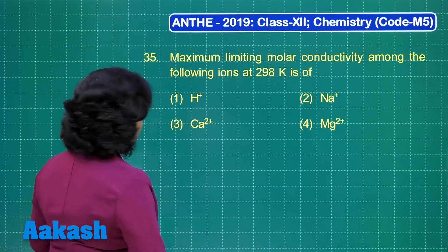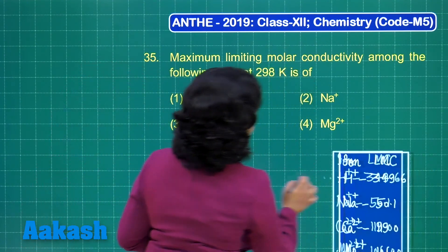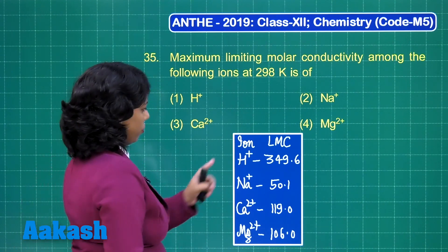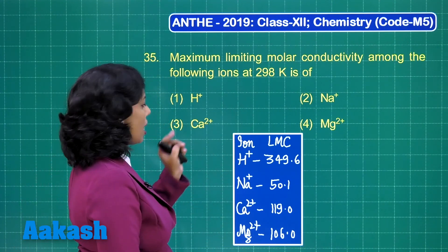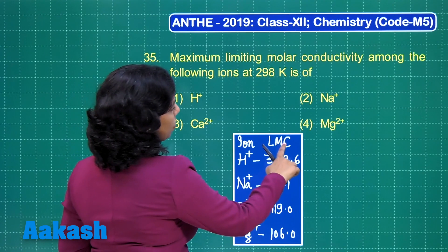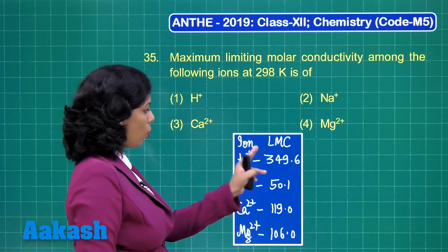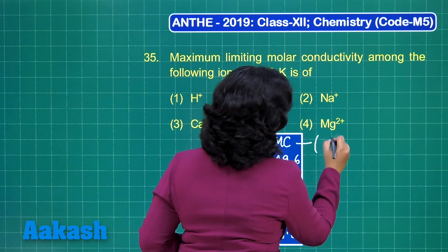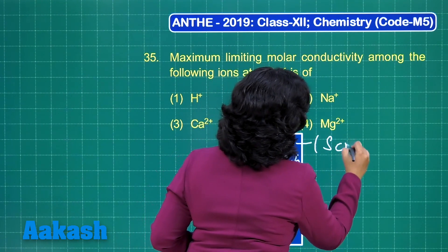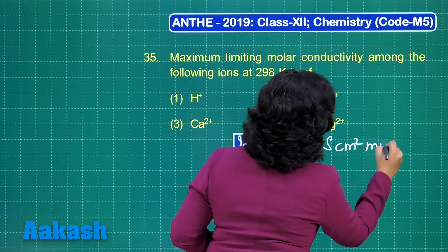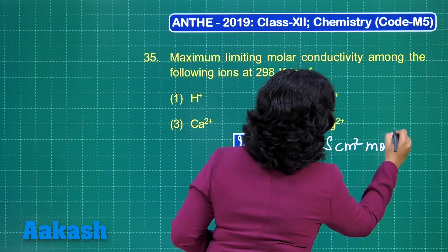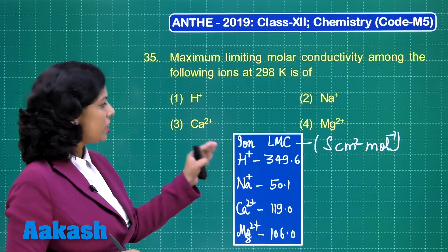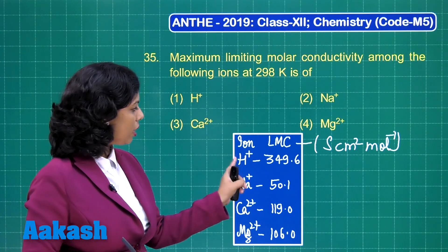I just want to show you this data here. We have these ions which are asked in this question, and the limiting molar conductivity values are also given here — all of these values are in centimeter square per mole. The question is: which has the maximum limiting molar conductivity value? It is the H⁺ ion.